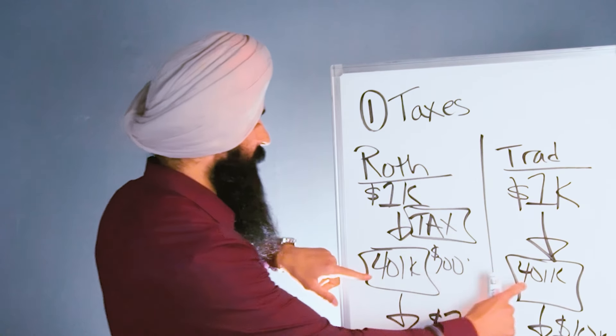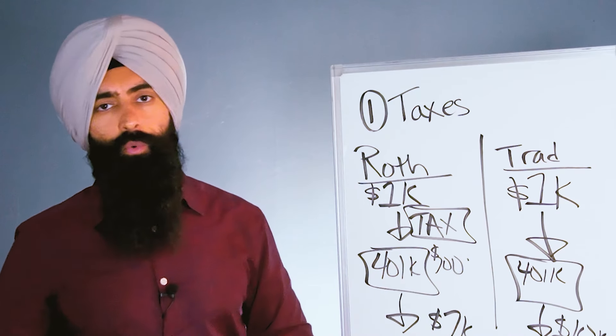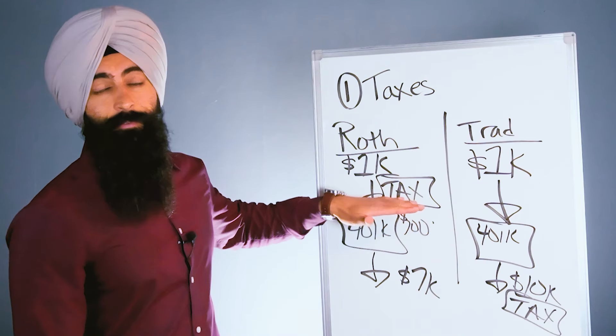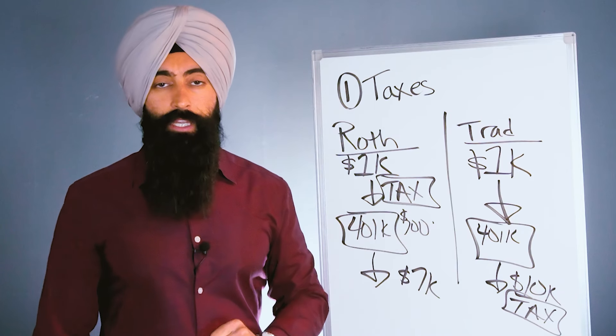You still have to pay taxes; your 401k just lets you defer taxes. With a Roth you pay taxes before the money goes in, with the traditional you pay taxes when the money comes out.